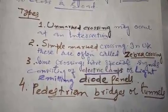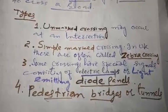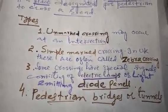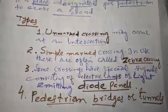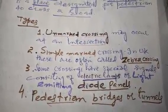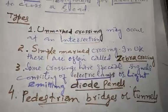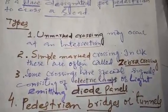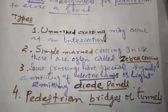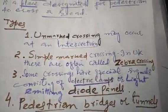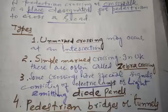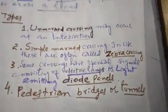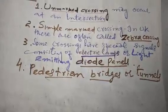The second type is the simple marked crossing. You will have seen black and white lines painted on the road surface — this is the simplest marked crossing. It may just consist of some markings on the road surface. In the United Kingdom, this is called a zebra crossing, where lines on the road indicate where pedestrians can cross.